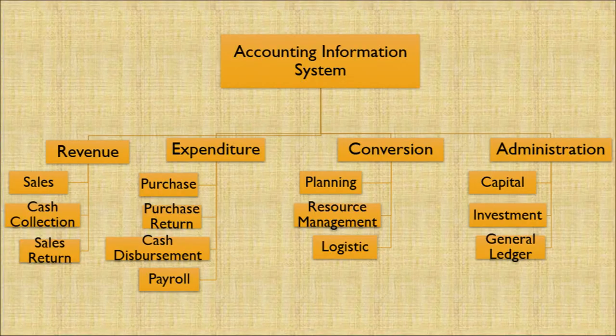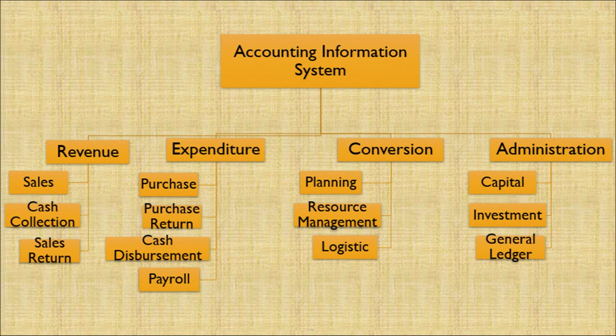Let's discuss accounting information systems. It includes revenue, expenditure, conversions, and administration. Revenue covers sales, cash collections, and sales returns. Expenditure covers purchase, purchase returns, cash disbursement, and payroll. Conversion covers planning, resource management, and logistics. Administration includes capital, investment, and general ledger. Therefore, the accounting information system helps an organization manage the whole accounting process through revenue, expenditure, administration, and planning of accounting entries.